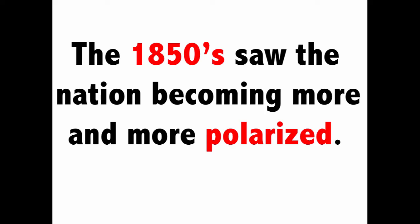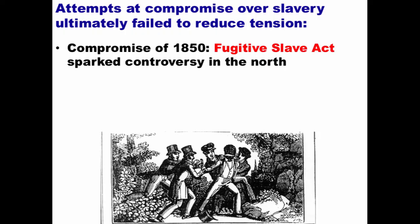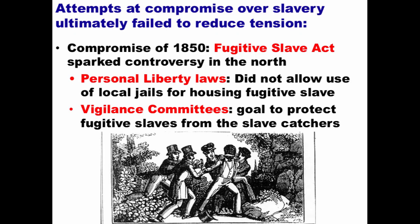The Compromise of 1850 stemmed the sectional conflict, but the 1850s saw the nation becoming more and more polarized. Attempts at compromise over slavery ultimately failed to permanently reduce tension. The Fugitive Slave Act sparked controversy in the North: Northern states passed personal liberty laws stating you could not use local jails to house fugitive slaves, vigilance committees were set up to protect fugitive slaves from slave catchers, and Southerners were angry over the North not fulfilling their end of the Compromise of 1850.